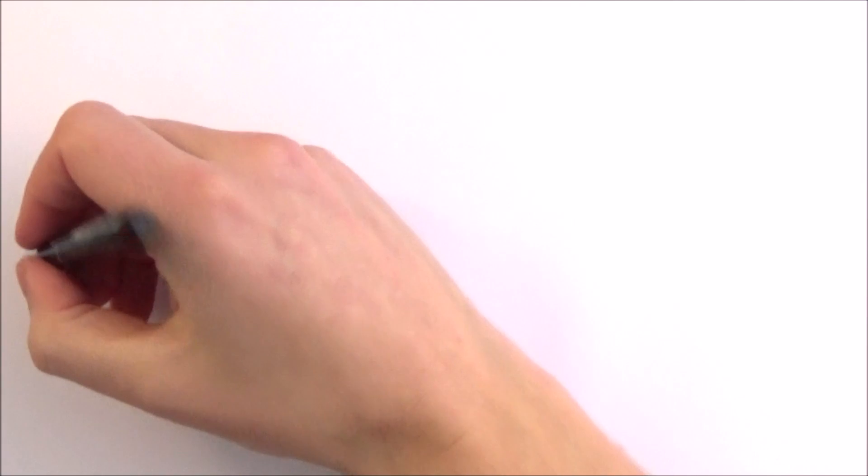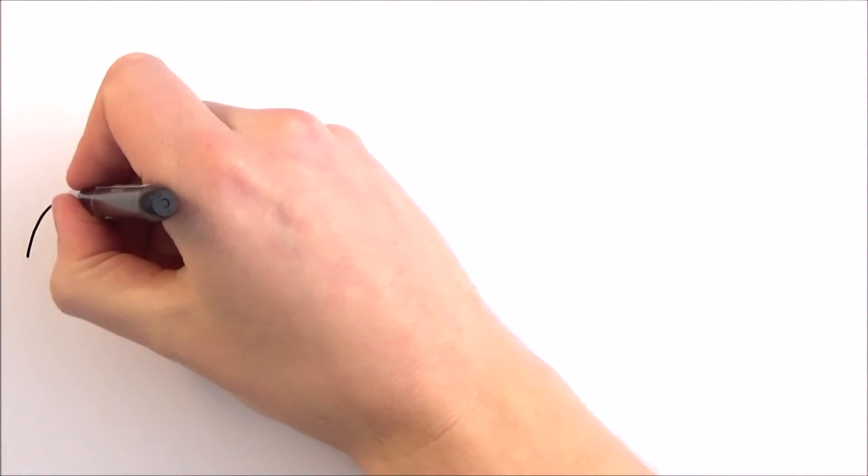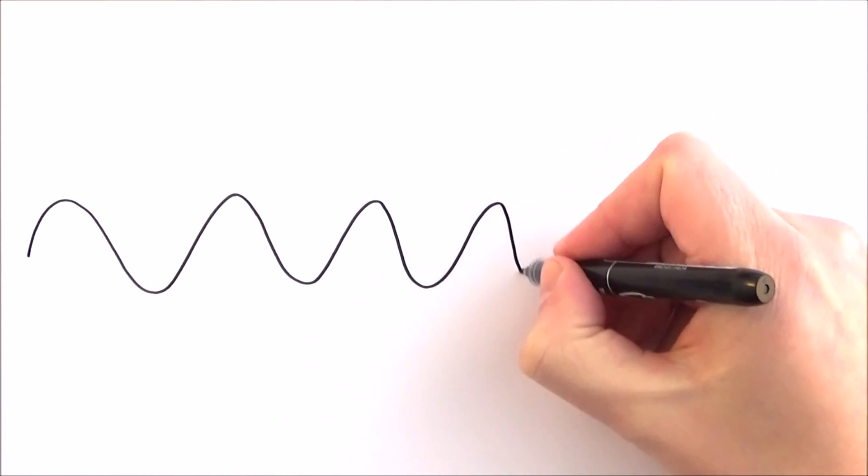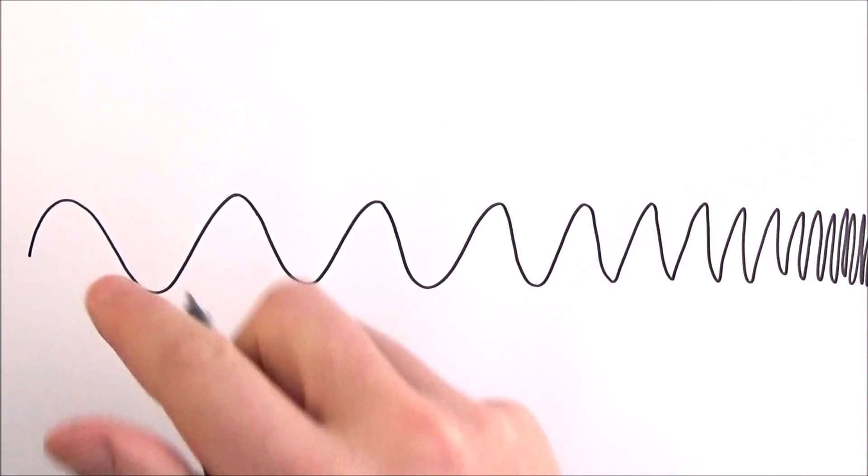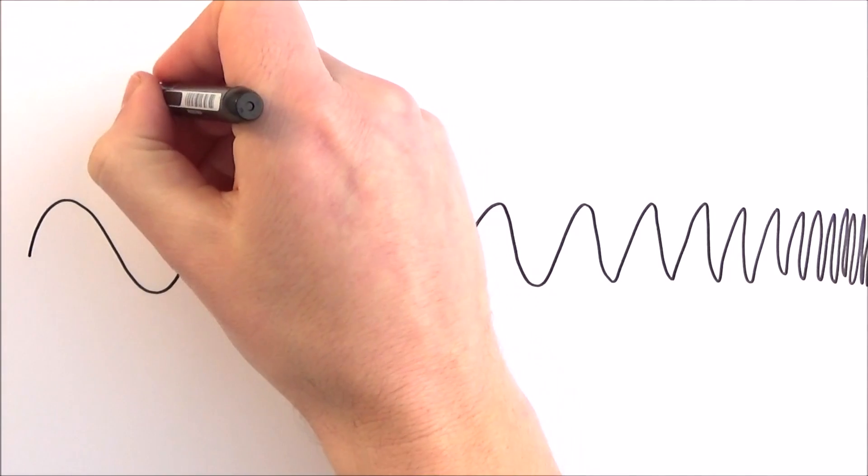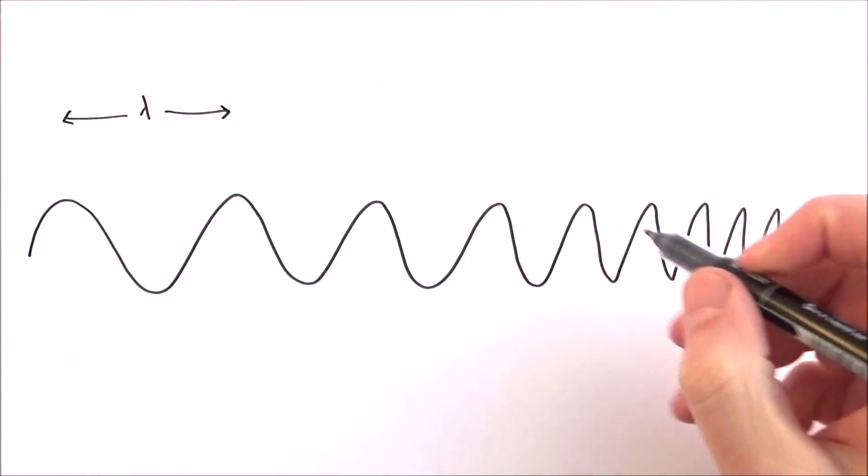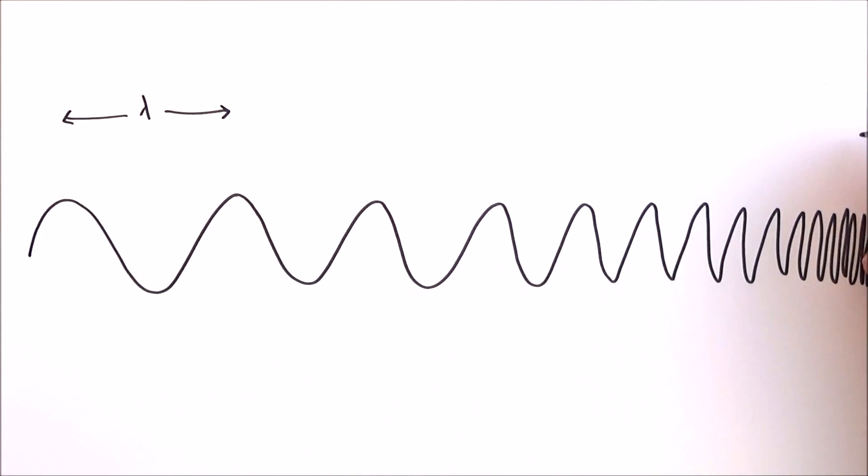Although the electromagnetic waves all travel at the same speed, there are different wavelengths and frequencies. And I'll see if I can get this diagram done all right. Now if we have the wavelength being from one wave peak to another, we can see that there's a long wavelength at this end and an incredibly short wavelength at that end.